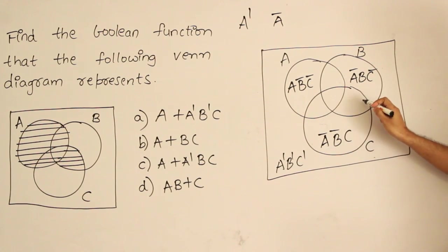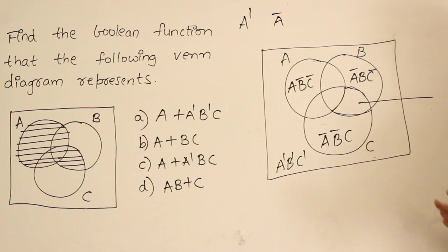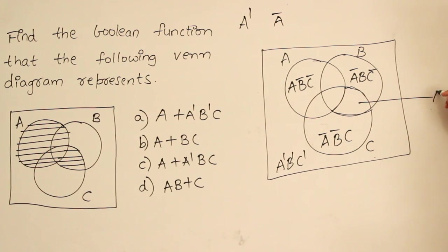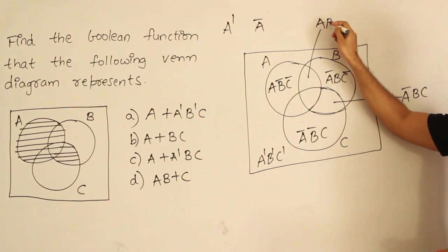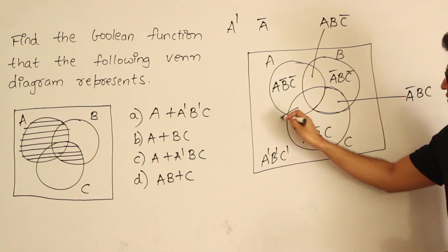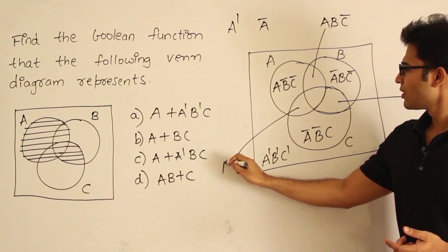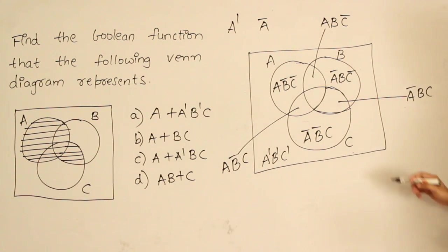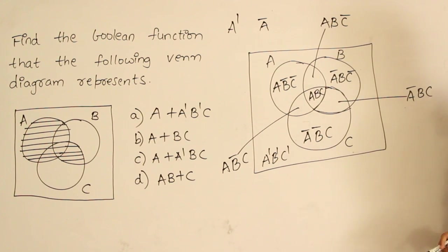Looking at the intersection regions: where only B and C are present but A is not, it is A prime, B, C. Where only A and B are present but C is not, it is A, B, C prime. Where only A and C are present but B is not, it is A, B prime, C. And where everything is present, it is A, B, C.